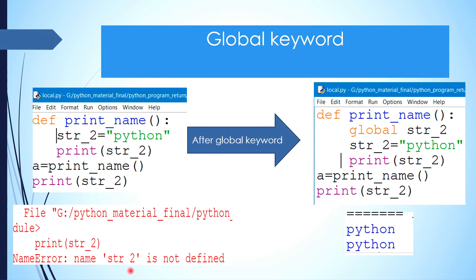Welcome to Sripriti educational online classes. Today we are going to see the global keyword — what is a global keyword, what exactly is a global keyword, and why we are using it. We have already talked about local variables, global variables, and their scope. Using the keyword global, we are able to access a variable created inside a function from outside the function as well.